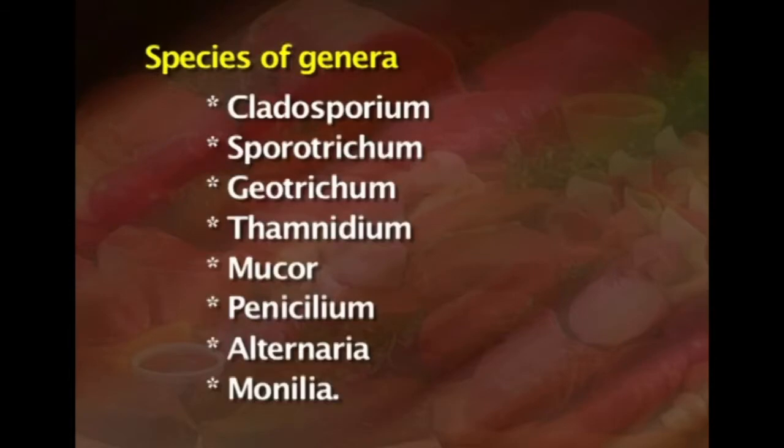During subsequent handling of meat, contamination can also come from carts, boxes or other containers, other contaminated meat, air and human personnel. Because of these varied sources, the kinds of microorganisms likely to contaminate meats are many. Molds of many genera may reach the surface of meats and grow there, especially species of Cladosporium, Sporotrichum, Geotrichum, Thamnidium, Mucor, Penicillium, Alternaria and Monilia.